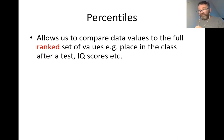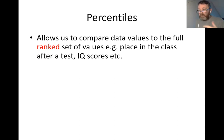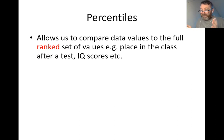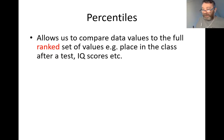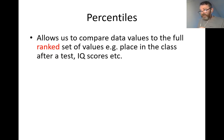Percentiles allow us to compare data values to the full ranked set of values. For example, if I gave a maths test tomorrow to first years and ranked all their scores in order — the key thing, same as with the median, is that the data must be ranked. The lower quartile, upper quartile, and median are all values of ranked data, and it's the same with percentiles. The data must be set from the lowest value to the highest value in increasing order.